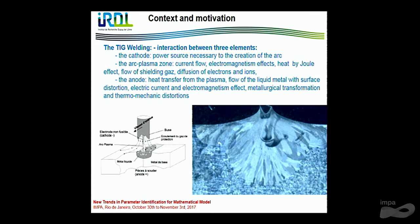And at last, we have the third part — the anode — where we have heat transfer from the plasma, flow of the liquid metal with surface distortion. You can see this variation. And we have electric current and electromagnetism effects, metallurgical transformation, and thermomechanic distortion.